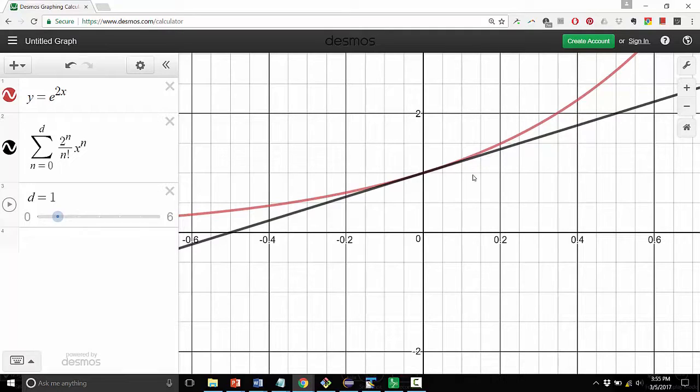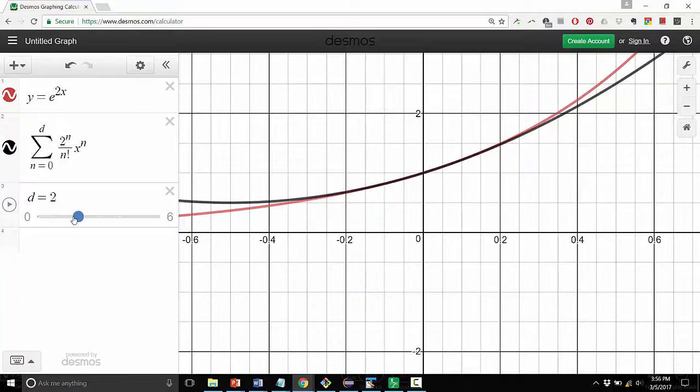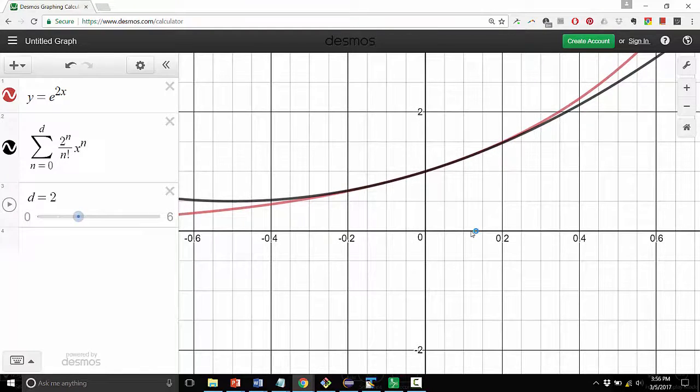So one way to think about this is what if we could tell our tangent line we want you not just to have the same slope as the original function, but we want your slope to change in the same way that the original function slope changes as you move away from x equals 0. So in other words, what if we could give them the same curvature, the same concavity?